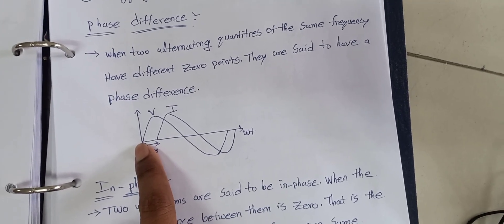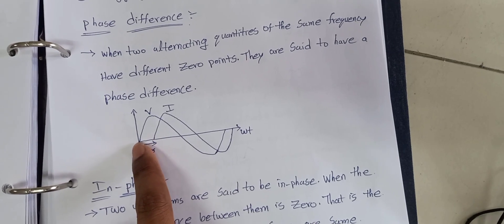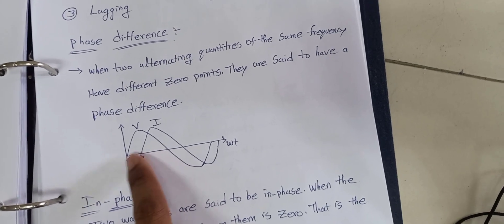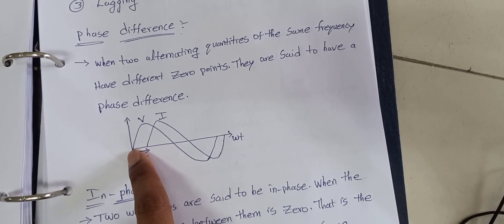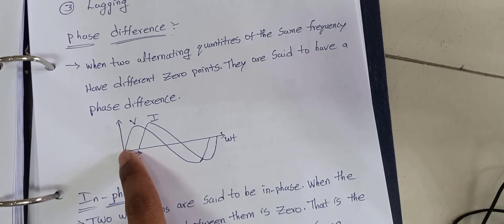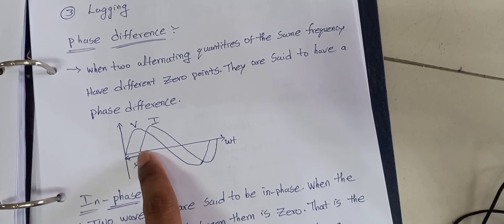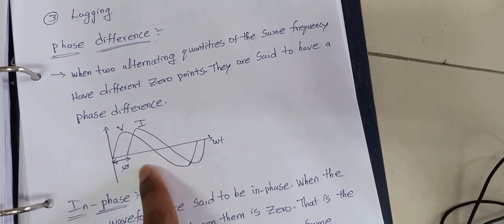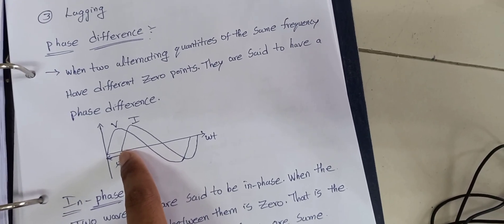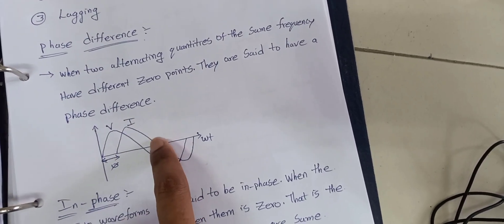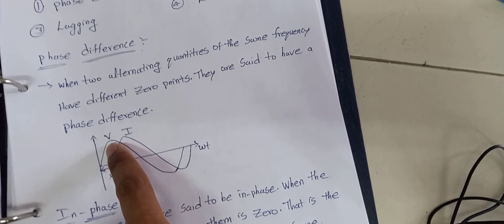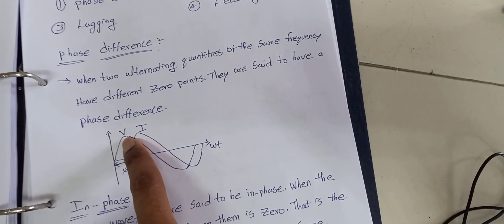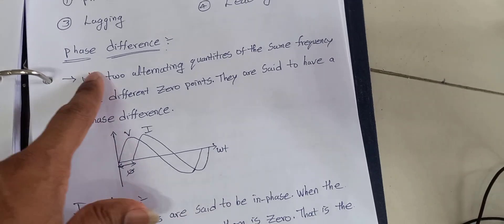It means where the voltage started differs from where the current starts — at a different point. For example, the voltage source started from the zero point, but the current started at 90 degrees of the voltage source. So at zero angle the voltage source started, but the current started at 90 degrees. That difference angle is what we call the phase difference.